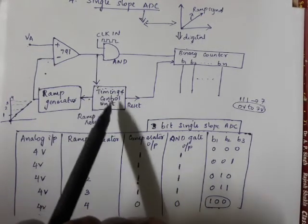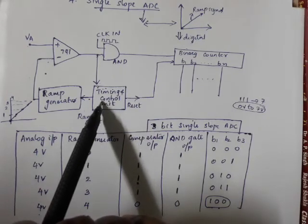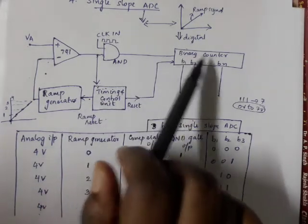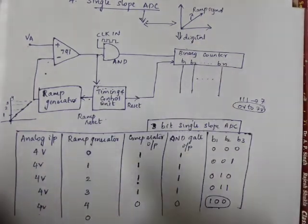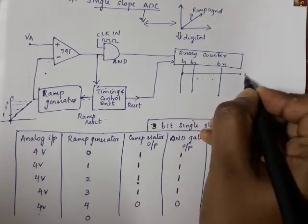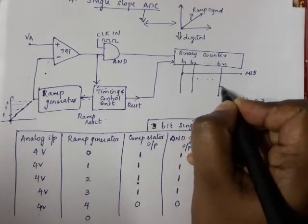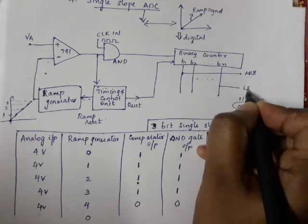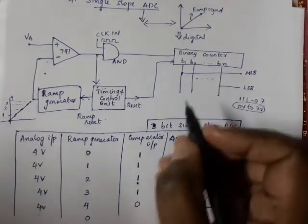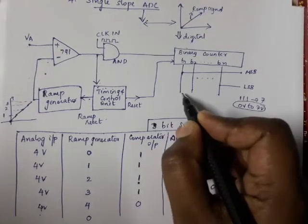When the comparator output is zero, the ramp generator resets. The binary counter value at that point represents the MSB down to the LSB. The output binary bits B1 through B3 are stored using latches to hold the final digital output value.